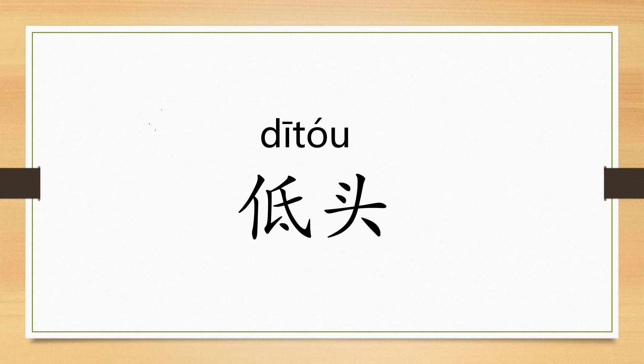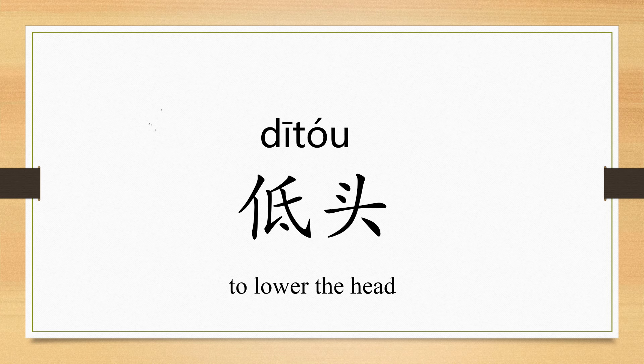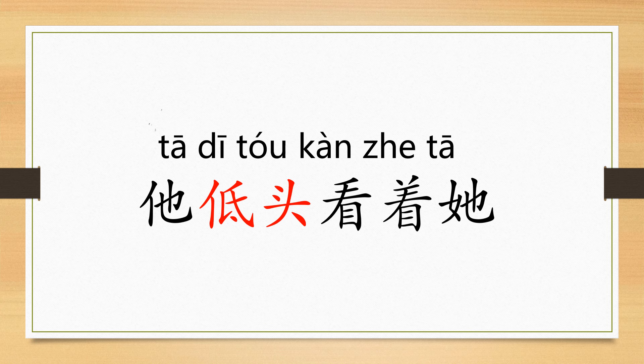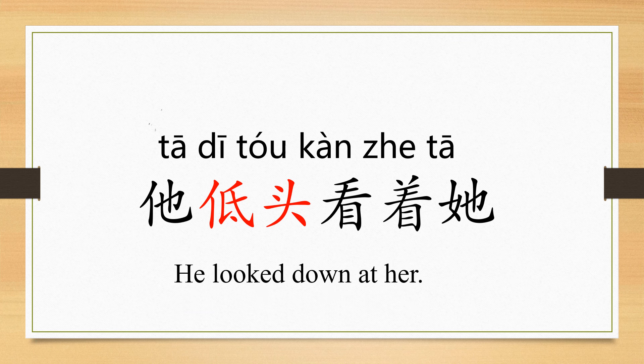低头. 头 means head. 低头 means to lower the head. 她低头看着她. 看 means watch, look at. 她低头看着她 — he looked down at her.